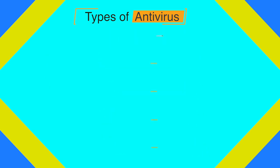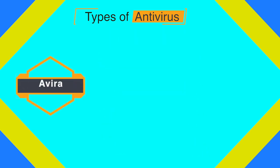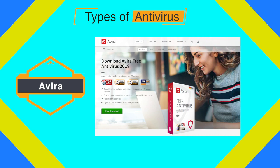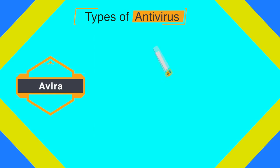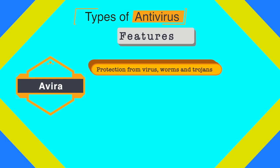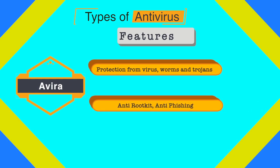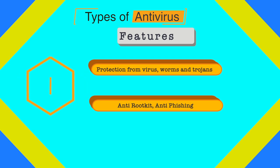The third antivirus on the list is Avira, a very comprehensive and easy-to-use antivirus program designed to provide reliable, free virus protection to home users. Avira's features include protection from viruses, worms and Trojans, anti-rootkit, and anti-phishing. Anti-phishing protects you when you receive emails claiming to be from a legitimate source and requesting personal information to claim a reward.